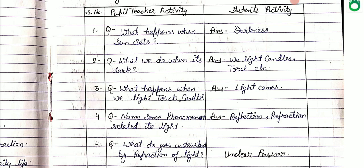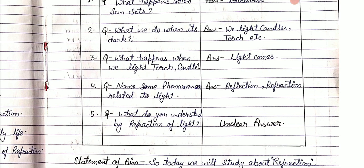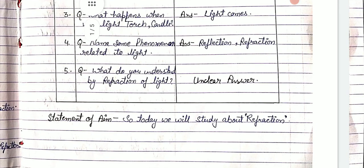Second question: what do we do when it's dark? Answer: we light candles, torch, etc. Third: what happens when we light a torch or candle? Answer: light comes. Fourth: names of phenomena related to light. Answer: reflection, refraction.